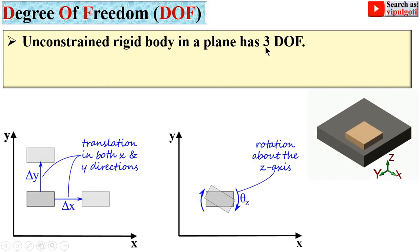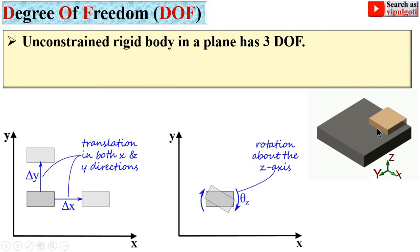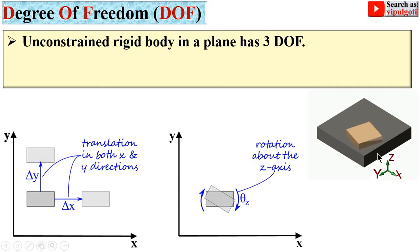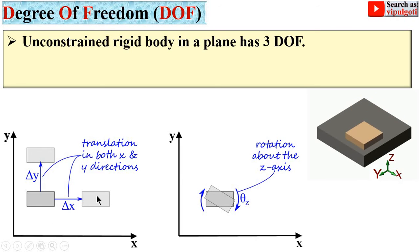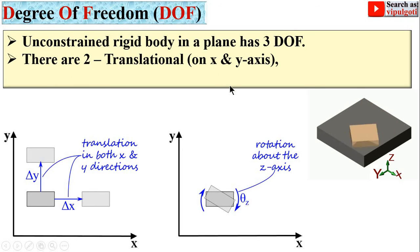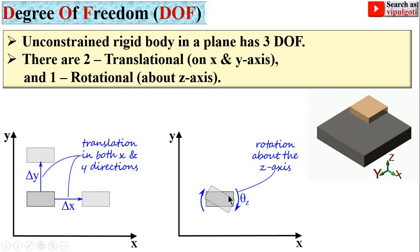An unconstrained rigid body in a plane has three degrees of freedom. Considering this figure, this is the plane on which the unconstrained rigid body lies. It has three degrees of freedom: movement on the x-axis and on the y-axis — two translational motions — and one rotational motion about the z-axis. So two translational motions on x-axis and y-axis, and one rotational motion about the z-axis gives three degrees of freedom.